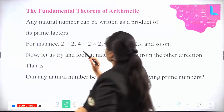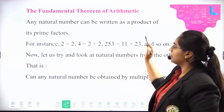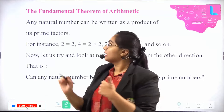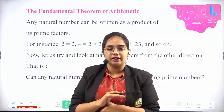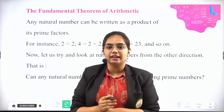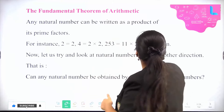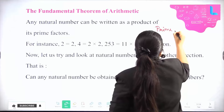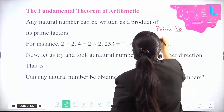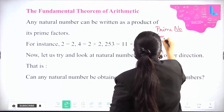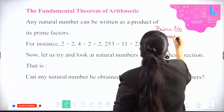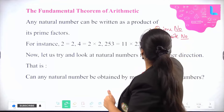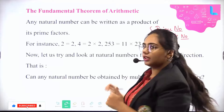Fundamental Theorem of Arithmetic. Any natural number can be written — first, let me tell you what is used in this whole Fundamental Theorem of Arithmetic. The words we will be commonly using are prime number and composite number. These are the two main words we will be using most commonly.